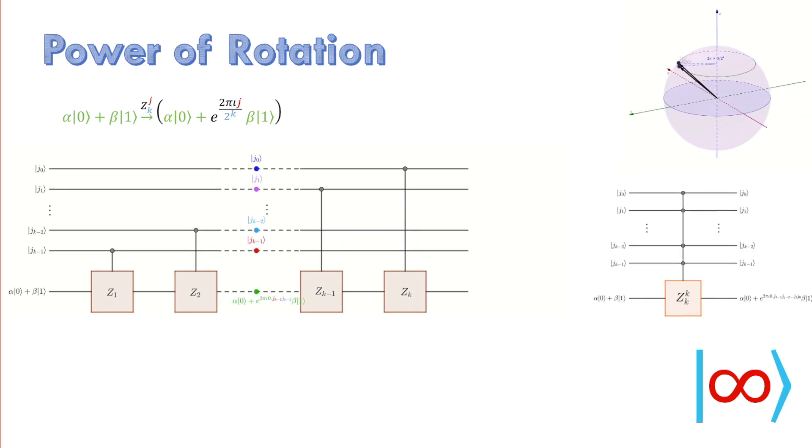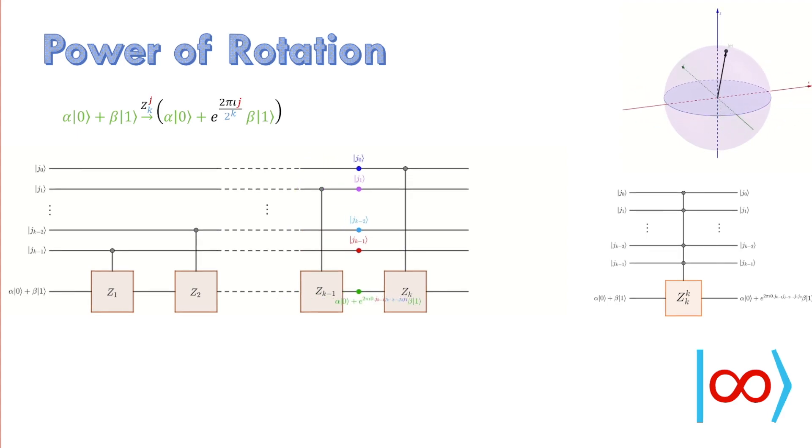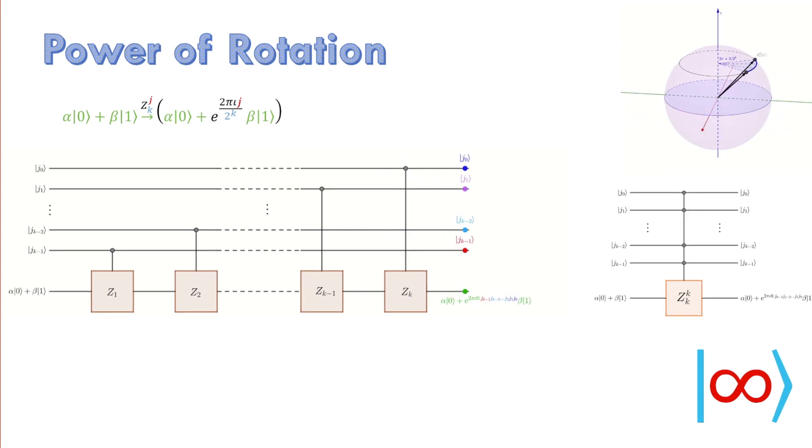A power j of this rotation can be implemented cleverly using only k rotations controlled by the bits of j. We denote this circuit by zk power k. Here, the lower k denotes division by 2 power k and the upper k denotes control by k qubits.